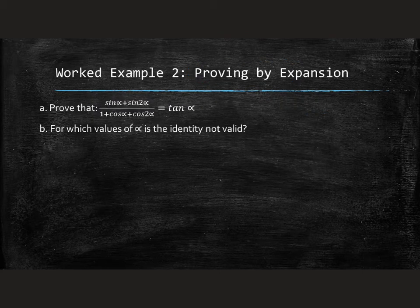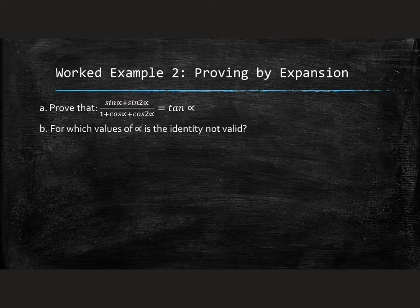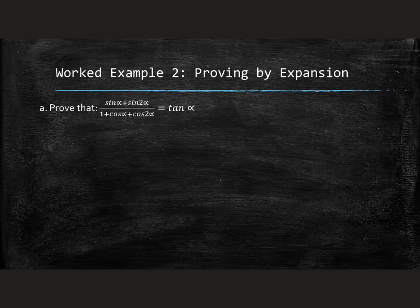Our second example for double angle says let's prove this expansion and discuss its validity. So the first part you're going to do is proving that sin α plus sin 2α all over 1 plus cos α plus cos 2α equals tan α. And then we're going to look at which values of α this identity is not valid. So pause the video and try to prove left-hand side, right-hand side for this expression.